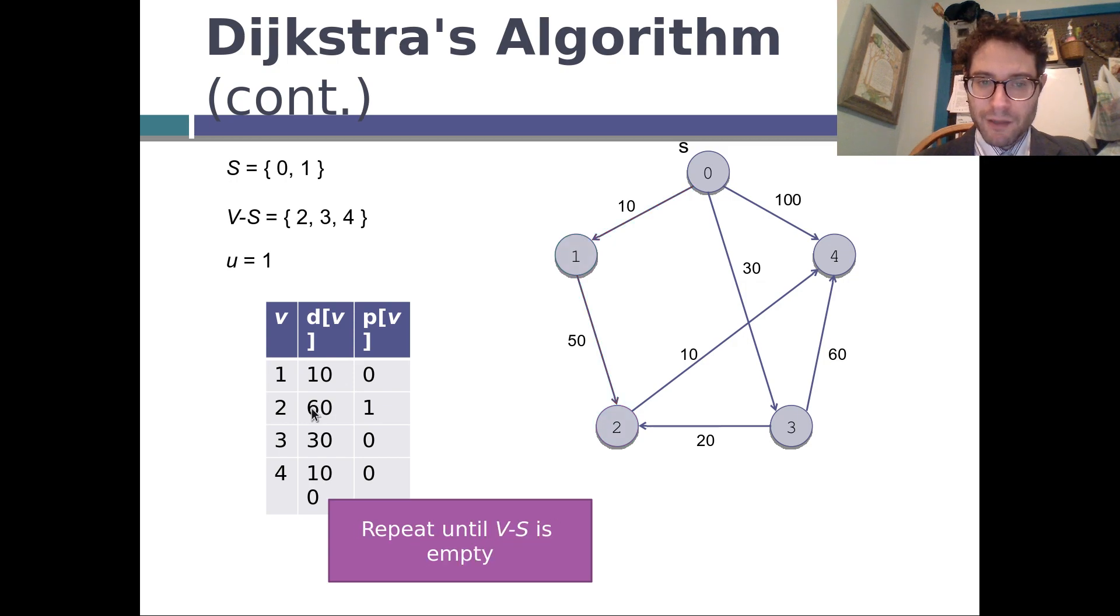So we're done processing 1. So now let's look at all the nodes. 2 has a cost of 60. 3 has a cost of 30. 4 has a cost of 100. So 3 is the cheapest choice. So we figured out the shortest distance of 3.